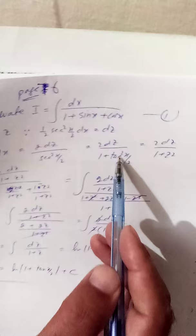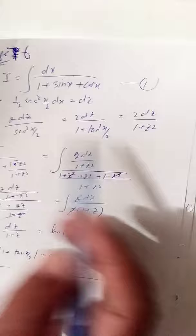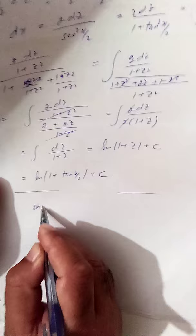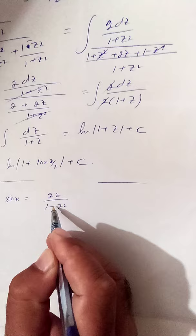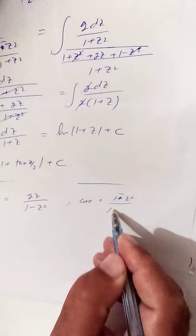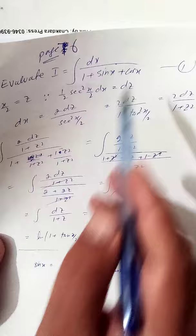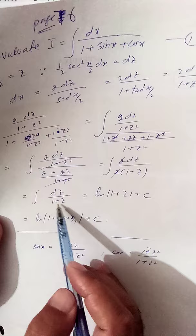Putting this substitution in: sinx can be written as 2z / (1 + z²), and cosx can be written as (1 - z²) / (1 + z²). Using this substitution and substituting for sinx and cosx and simplifying the integration, we get 2dz / (1 + z).